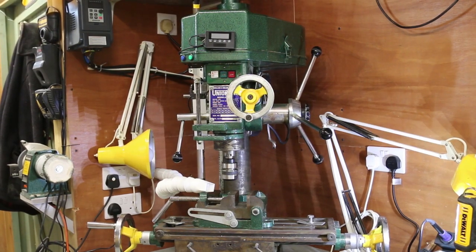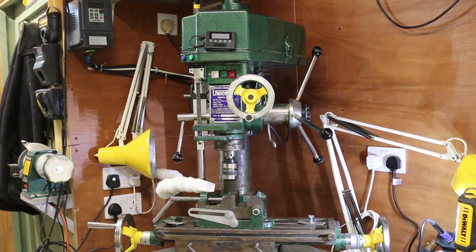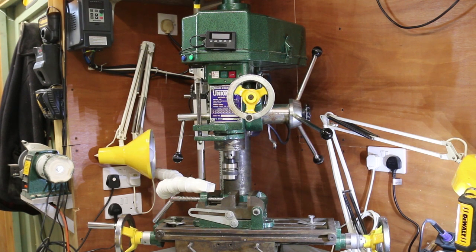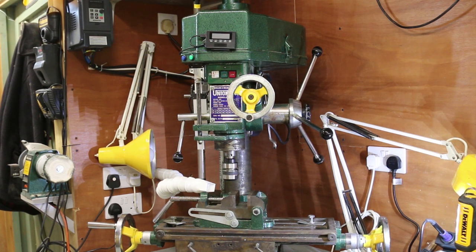Round column drill mill machines have been very popular for about 40 years. There is however one major problem with them. Although they combine the features of both a pillar drill and a milling machine, because they are mounted on a column they can rotate around it.